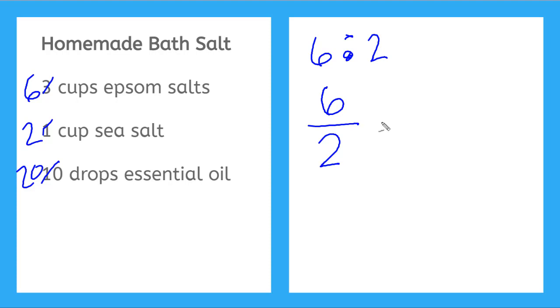But again, I can simplify this fraction. Two goes into six three times. So the rate of my doubled recipe stays the same.